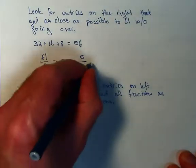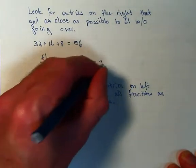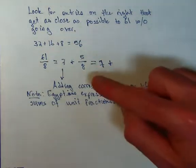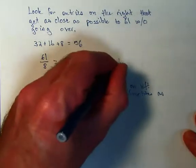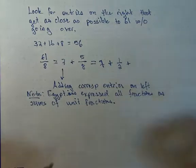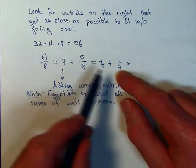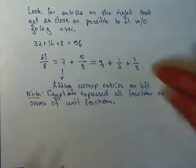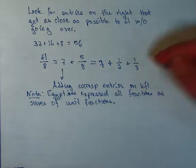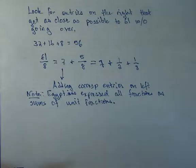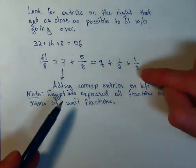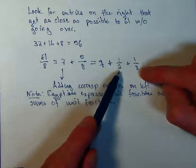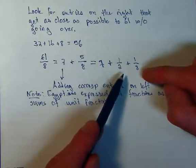Now, in this particular case, getting the answer is not too hard. We can break up the 5 eighths. 5 eighths, of course, is bigger than a half. So it's going to be a half plus something. A half, we can treat that as 4 eighths. So, to get to 5 eighths, we just need an additional 1 eighth. In this particular case, the fraction basically breaks up itself. And this is the way the Egyptians would have written their answer: the whole number part and then any fractional part expressed as a sum of unit fractions.